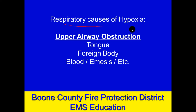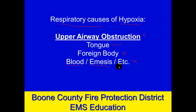Other respiratory system causes of hypoxia: you could have an upper airway obstruction, most commonly the tongue. It could also be a foreign body — especially small kids will explore things in their mouth and choke on them. If you can't get any air in, obviously you can't transport oxygen to the tissues, so we have hypoxia. Another very common cause of upper airway obstruction includes things we can suction out: blood, emesis, and a variety of other things depending on the mechanism of injury. We want to always manage those aggressively and early in our care.